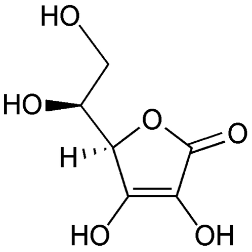Because there is no net change in charge during a redox reaction, the number of electrons in excess in the oxidation reaction must equal the number consumed by the reduction reaction. Elements, even in molecular form, always have an oxidation state of zero. In the first half-reaction, hydrogen is oxidized from an oxidation state of zero to +1. In the second half-reaction, fluorine is reduced to an oxidation state of −1. When adding the reactions together, the electrons are cancelled and the ions combine to form hydrogen fluoride: 2H⁺ + 2F⁻ → 2HF.